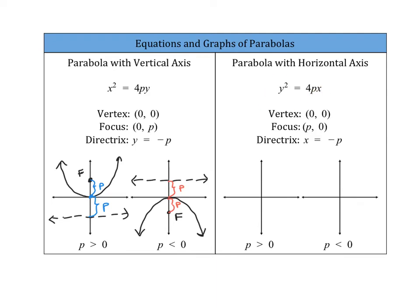The equation for a parabola with a horizontal axis — a sideways parabola — looks like this: y² = 4px. You can tell because now y is being squared. We center around the p-value. The vertex is still at (0, 0), but the focus is now at (p, 0). If the p-value is positive, the focus is to the right, and the directrix is a vertical line at x = −p. The parabola faces to the right.